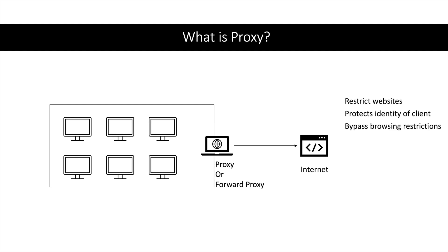Next is bypassing browsing restrictions. You must have done this sometime — if you want to access a website which is currently not accessible, you change the proxy. This way you can get access to a website which your current proxy is blocking by changing that proxy. Now that may not always be possible because of certain techniques.